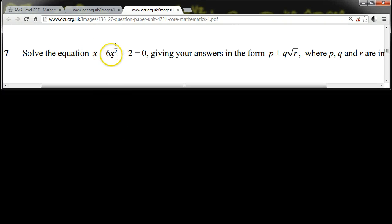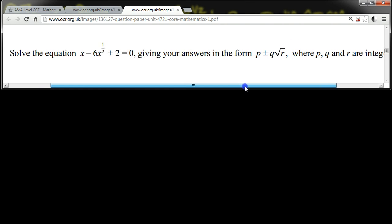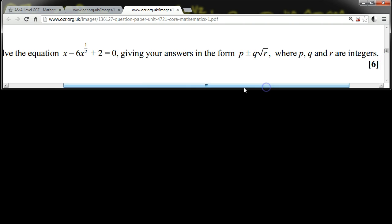Solve the equation x minus 6x to the half plus 2 equals 0, giving your answer in the form p plus or minus q times root r, where p, q and r are integers.